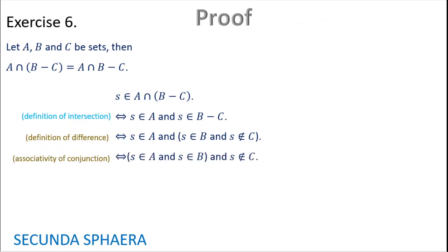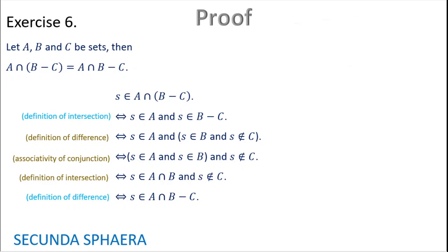Now using the definition of intersection, it gives that S is in A and S is in B, and S is not in C. Then using the definition of intersection again, S is in (A intersection B) and S is not in C. And now using the definition of difference of sets, S is in (A intersection B) without C. This argument connected by equivalences starts with S in A intersection (B without C) and ends with S in (A intersection B) without C, proving the equality. This concludes exercise number 6.